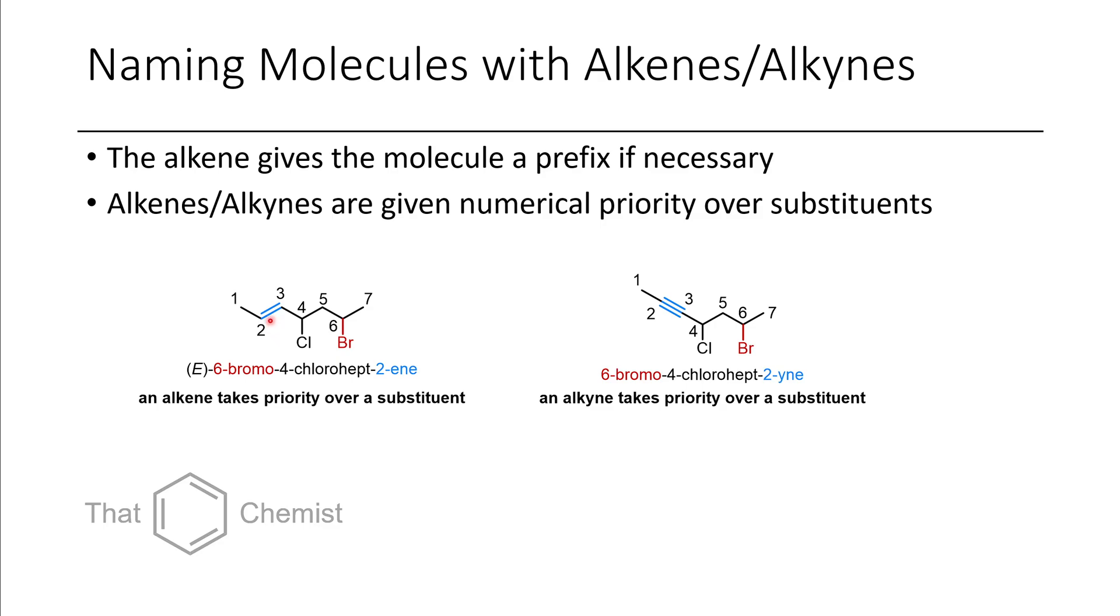If we have alkenes or alkynes in molecules, they take priority for the numbering over substituents in the backbone. In this case, you give the prefix of the entire alkene at the beginning of it. If there's multiple alkenes, you'd list all of them at the beginning. So in this case, we have our entgegen, our opposite alkene, which is just a trans alkene. The E is just used for precision, for consistency.